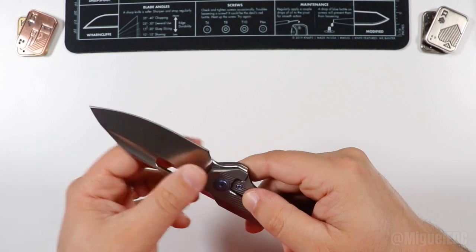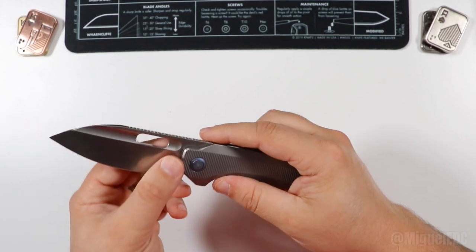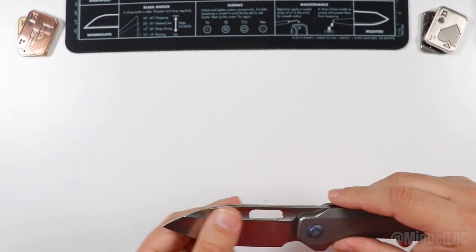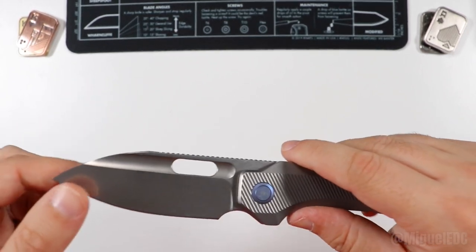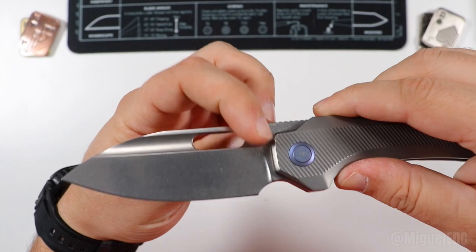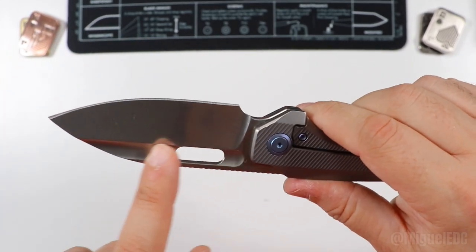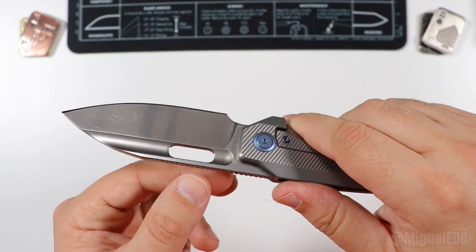I'll give it a nice Break Free CLP cleaning treatment as soon as I start EDC-ing it. Check out this fuller - this fuller is so unique, nice big and wide, going on on both sides. That is just so savage looking, very unique, very different.